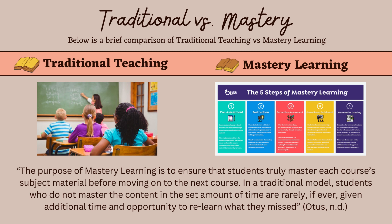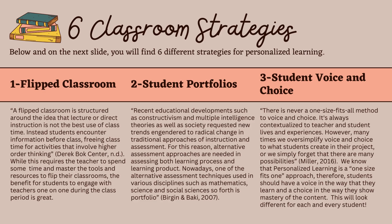I pulled this quote from Otis: the purpose of mastery learning is to ensure that students truly master the subject material before moving on to the next course. In a traditional model, students who do not master the content in the set amount of time are rarely, if ever, given additional time and opportunity to relearn what they miss. And in content areas where content builds on each other — like math, world history, or U.S. history — this is really unfortunate. If you don't master two plus two, how will you master two times two?